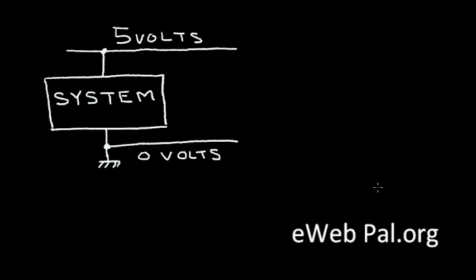Let's design a very simple circuit using a diode. Let's presume that I have an electrical system as shown by this box. This system runs on a 5 volt power supply and ground, which I call zero volts. What I want to do is I want to design a power indicator light that tells me that my power is on.